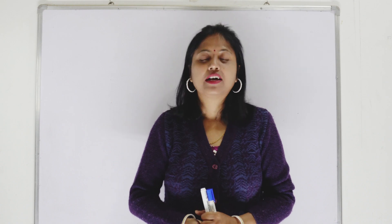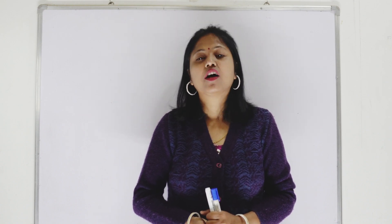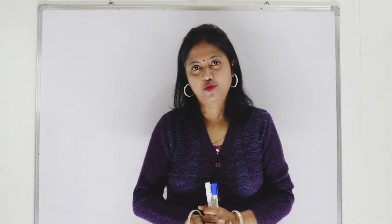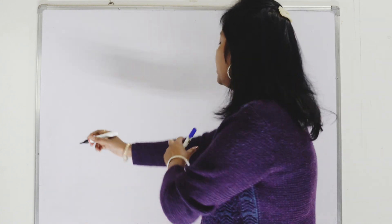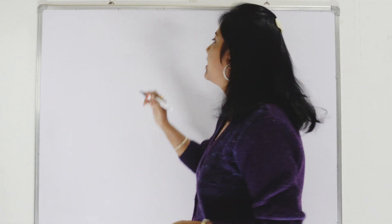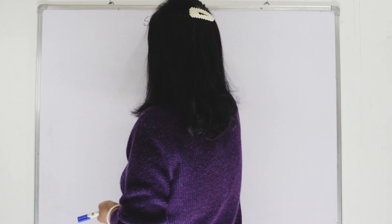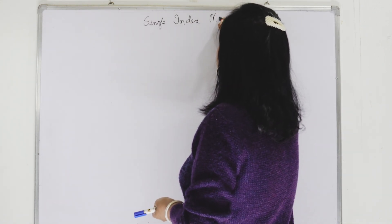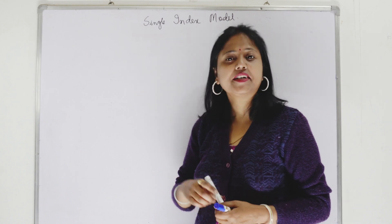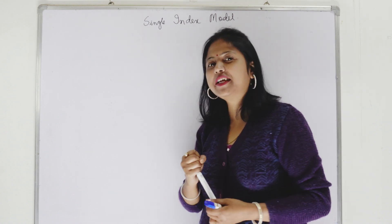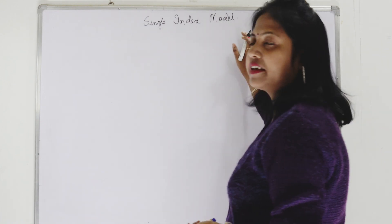In this video, as we have seen in the last video, if we follow the Markowitz model, this requires computation of portfolio risk and returns for n number of combinations of portfolios. That means our calculation becomes very difficult as we have to calculate so many variances, so many covariances, so many portfolio returns. In order to overcome these complications, we have come up with another model — the single index model — which is a very easy way of understanding a portfolio's risk and return.